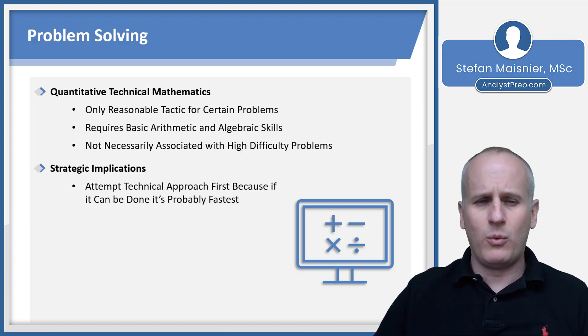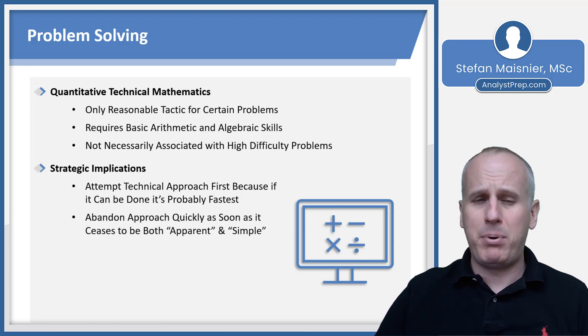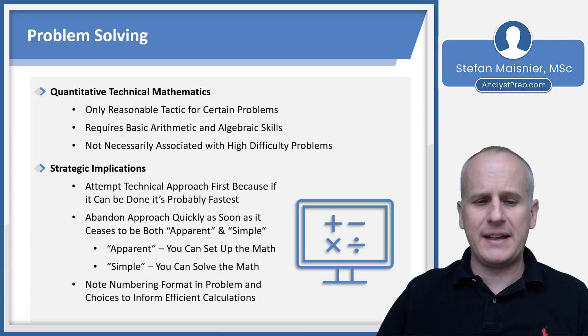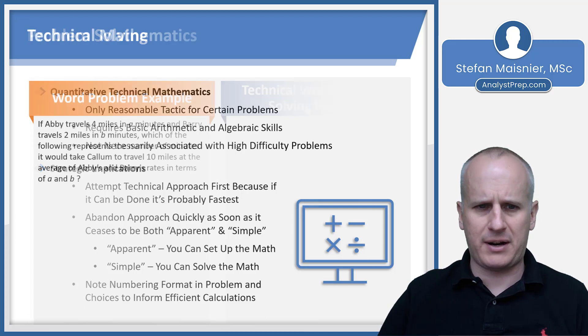Strategically, you want to attempt the technical approach first, because if you can do it, it's probably the fastest way. But as soon as the approach ceases to be both apparent and simple to you in the moment, you'll have to decide to go a different route. Apparent simply means that you can set up the math; simple means that you can solve it. You'll want to note your numbering format in the problem and the choices to inform efficient calculation.